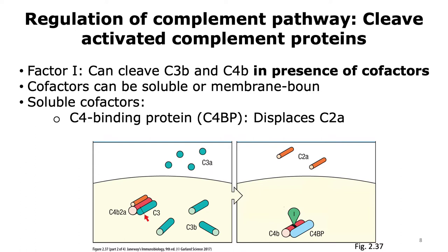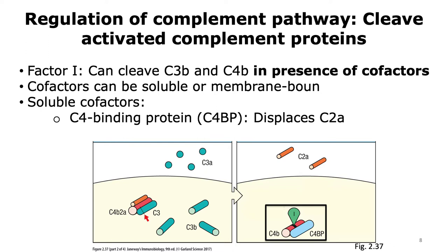Host cells make a protein called the C4-binding protein, or C4BP. The C4-binding protein is able to target the C4B2A complex and interacts with the C4B part of that complex, displacing C2A in the process. C4B2A is a C3 convertase, and without C2A it loses its enzymatic activity. Furthermore, by binding to C4B, the C4-binding protein is able to recruit Factor I, which can then cleave C4B, thereby disabling the C3 convertase.